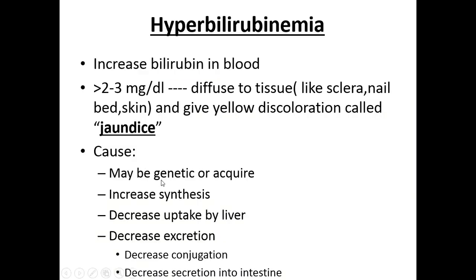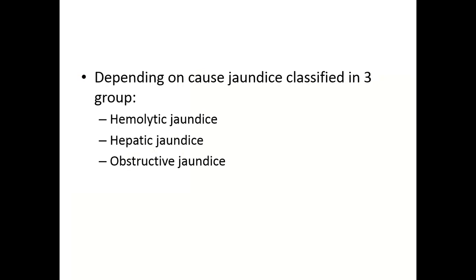Causes may be genetic or acquired: increased synthesis of bilirubin by any cause — most commonly hemolysis; decreased uptake by the liver due to hepatocyte damage; or decreased excretion either by hepatocyte damage or blockage in the bile duct. Based on that, jaundice is classified into three groups: hemolytic or pre-hepatic jaundice, hepatic jaundice, or post-hepatic or obstructive jaundice.